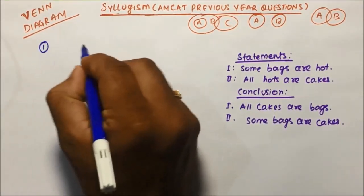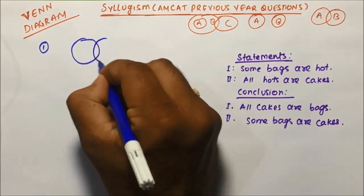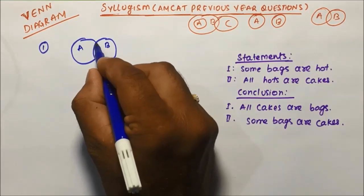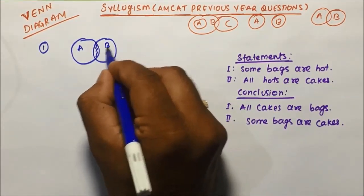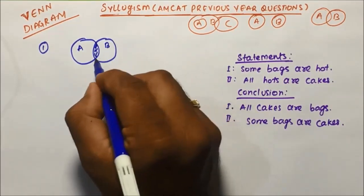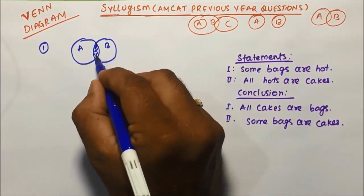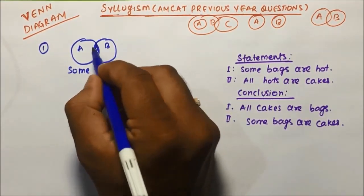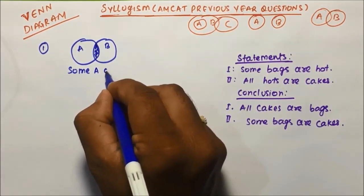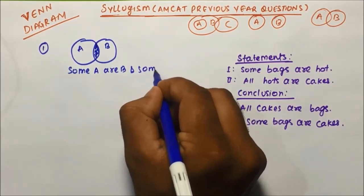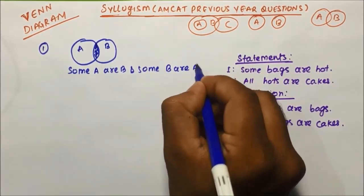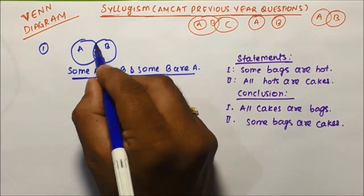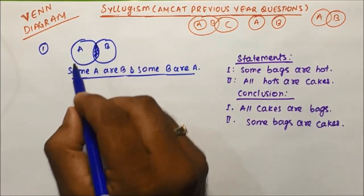I am going to draw one diagram — this is A and this is B, two intersecting circles. You can see some part of A is in B and some part of B is in A. From here we can say 'some A are B' and we can also say 'some B are A' — both are true. If some A are B, then we can also say some B are A in this diagram.